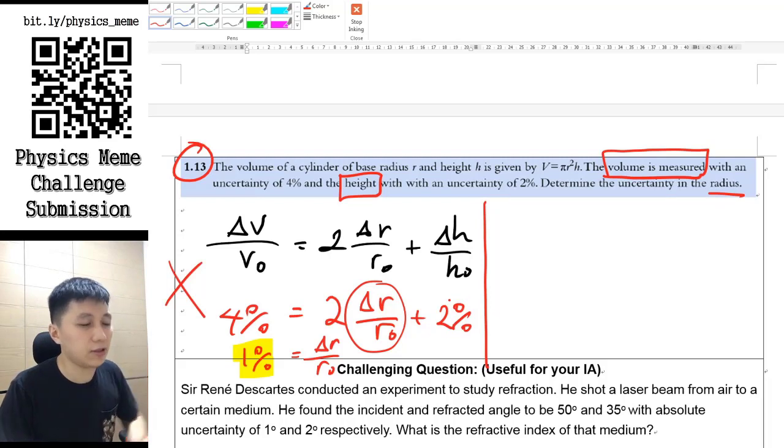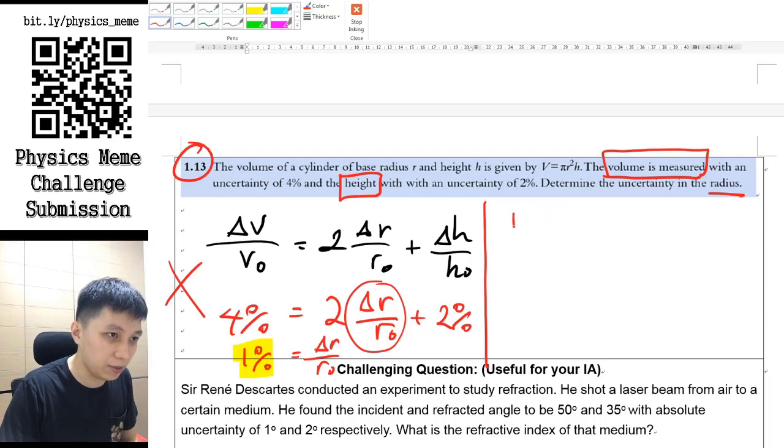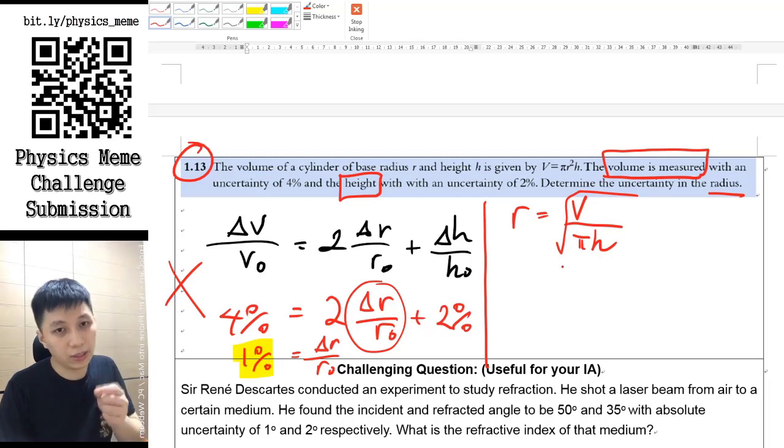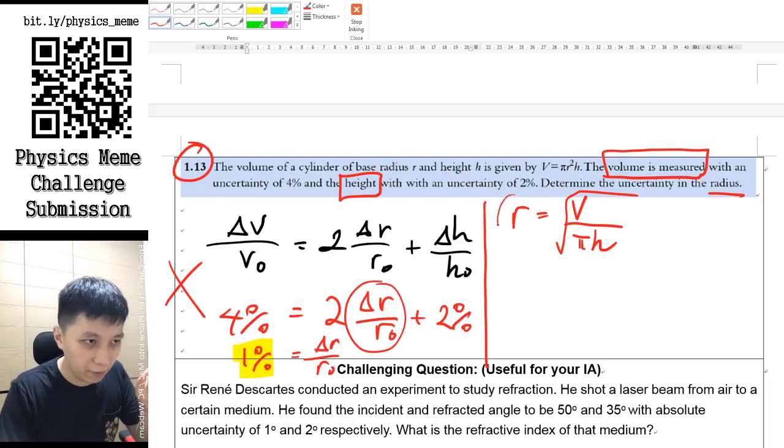The actual way of doing it should be rearranging the formula because the way that you calculate r should actually be v divided by pi h, square root. Yes, that's right. So in this case, then you can now finally deduce the formula because if you, again, look at the data booklet, you always start with whatever you want to calculate with the main term in the equation, and then you apply the equation.